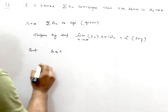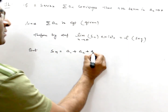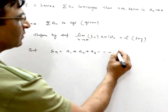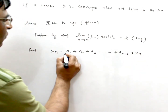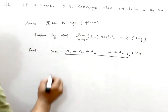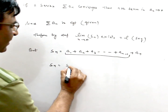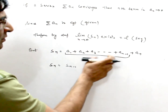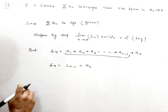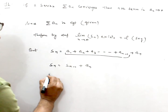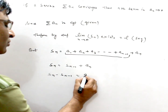Since SN equals A1 plus A2 plus A3 plus ... plus AN-1 plus AN, we can write SN as SN-1 plus AN. Taking the left side, SN minus SN-1 is equal to AN.